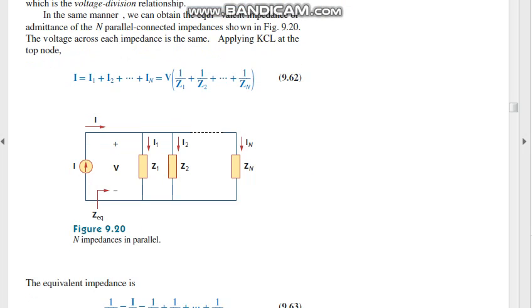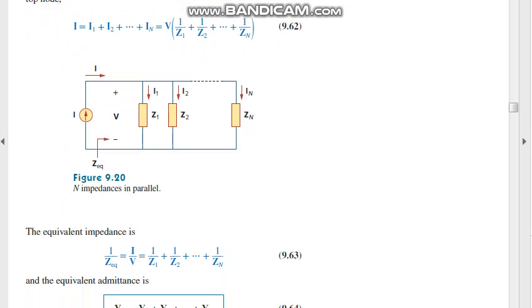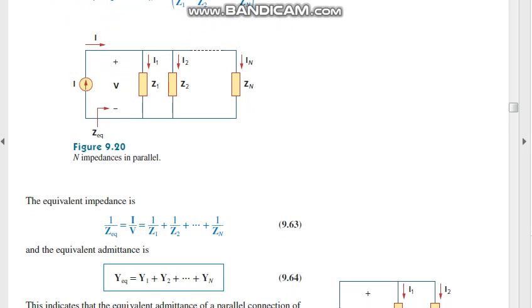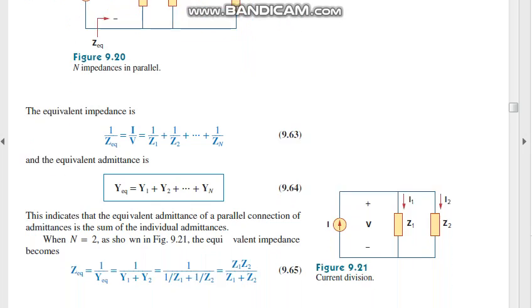Applying Kirchhoff's current law, we can find for N parallel connections - as we know in parallel connection the current will be divided into two, three, or many N impedances in parallel and voltage remains the same. There is a current source given here, and we can find the total current divided into I1, I2, up to In, and from this we can calculate the current division principle.